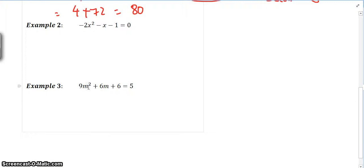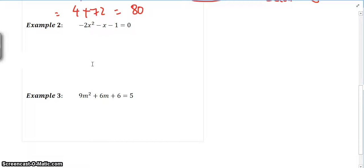So let's have a look at the next question. Once again, what is your a value? a value is minus 2. b value is minus 1. And your c value is minus 1. So the formula for the discriminant is equal to b squared minus 4ac.